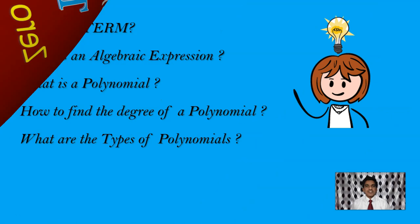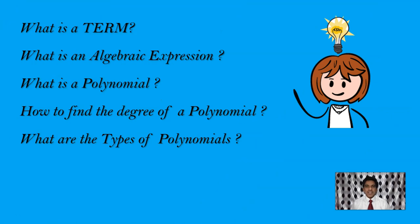In the previous tutorial, these are the topics that we have already covered. We have discussed what is a term and what is an algebraic expression, which algebraic expressions become a polynomial, how to find the degree of a given polynomial, and also we have discussed the classification of polynomials based on the number of terms and the degree of the polynomial. If you have not watched that video, I suggest you to please watch that video before watching this tutorial.